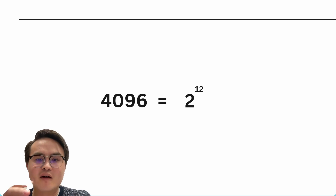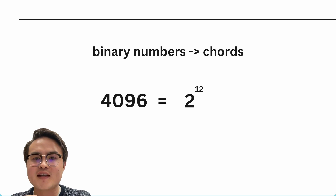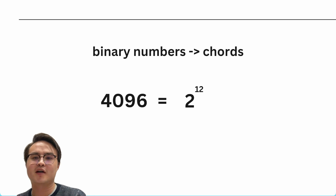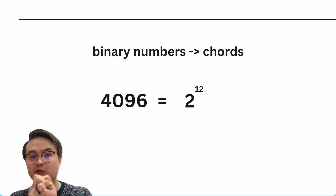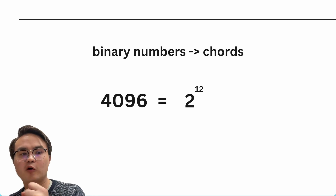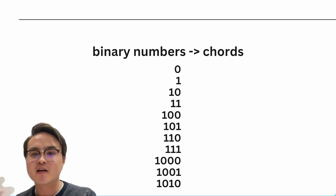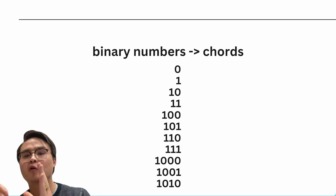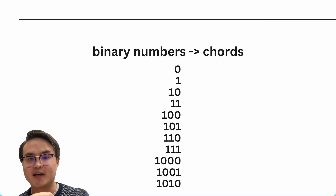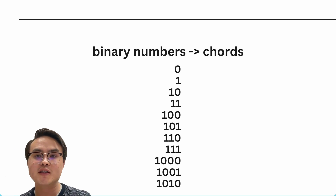Whenever you have 2 with an exponent above it, this tells us that we can think in binary terms. Binary numbers are a great way for us to derive and generate chords algorithmically. A binary number is expressed by a 1 or a 0 — two different options, a binary option.